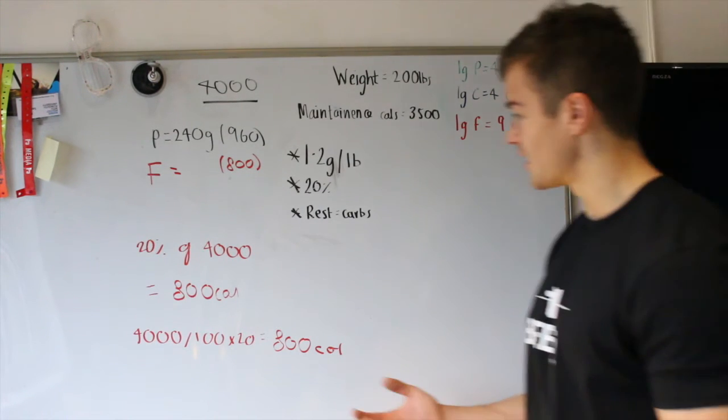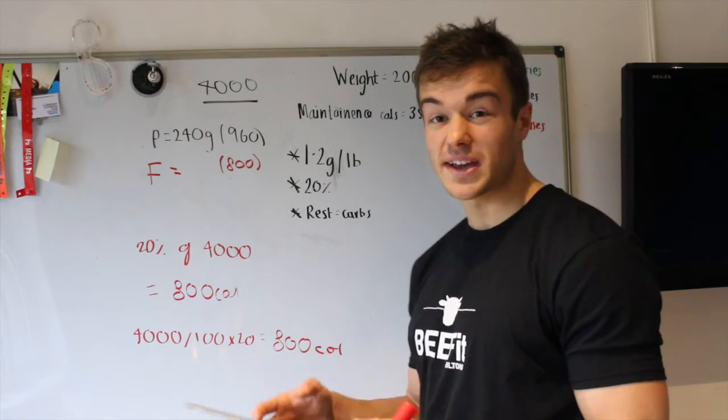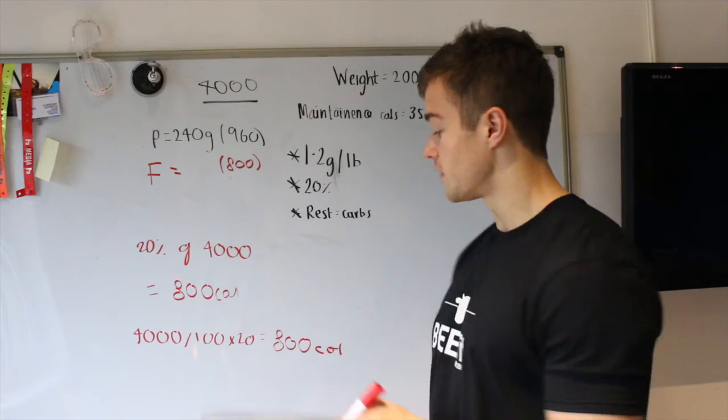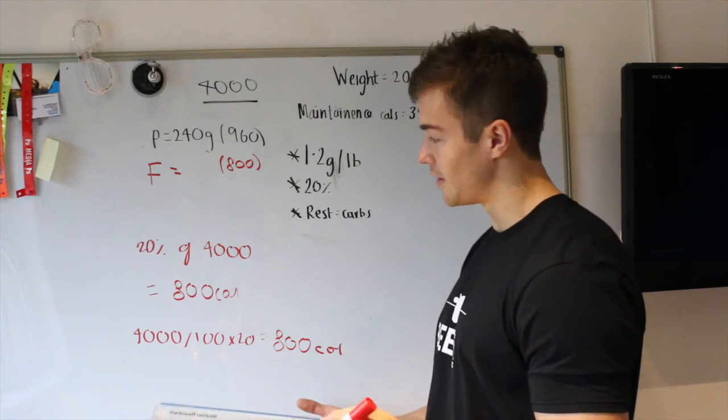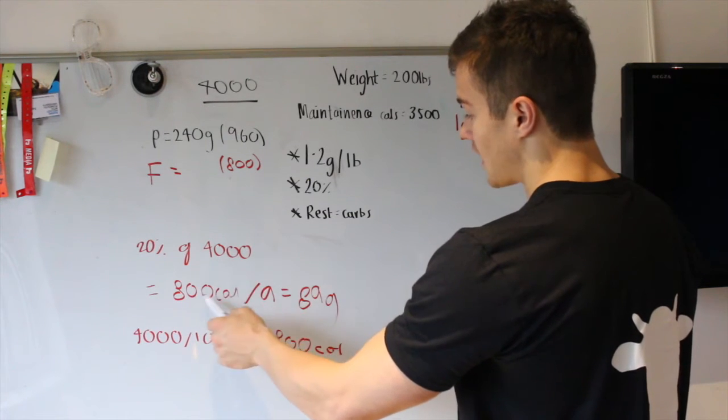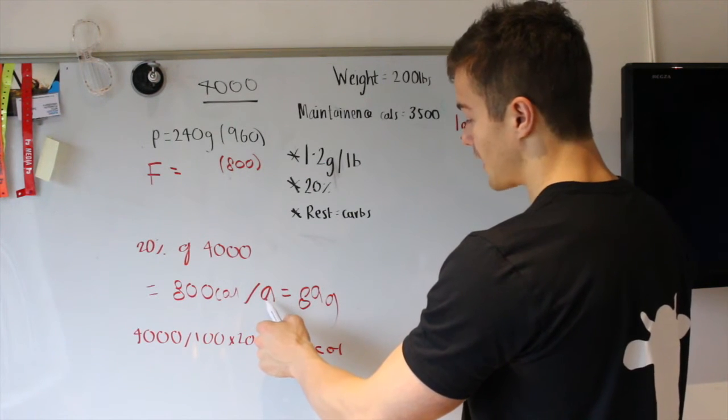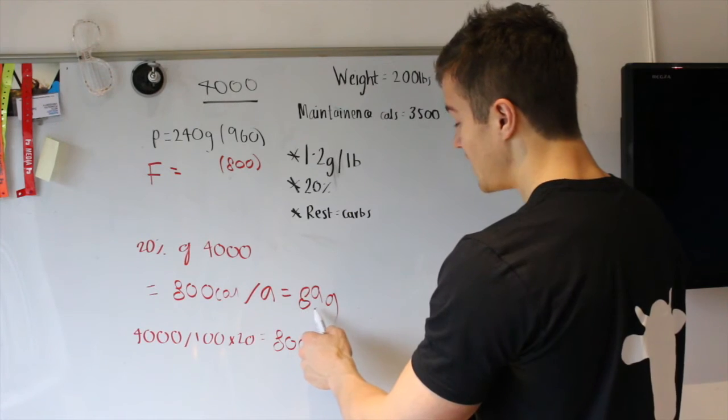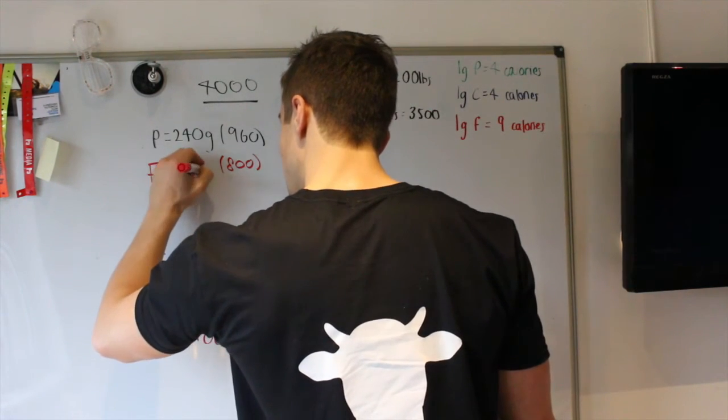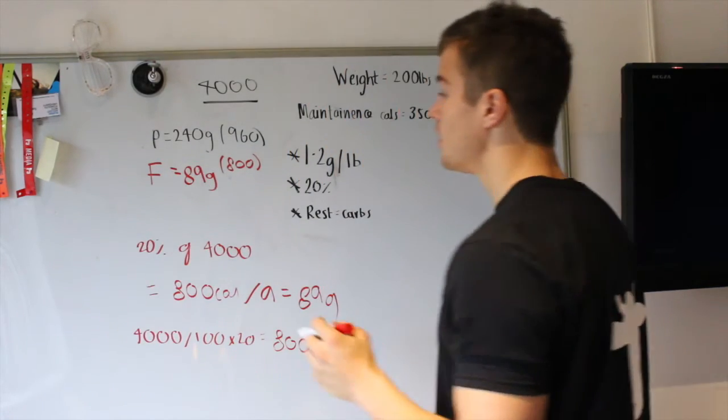It's more calorie dense. So, as I said earlier, if you struggle to gain weight, struggle to get those calories in, you might want to go to 25% fat, slightly higher, rather than 20%. But I don't really struggle that much. We are going to do the amount of calories from our fat, which is 20% of our total calories, divided by 9, which is the amount of calories in 1 gram of fat, equals 89 grams. So, I'm going to be on 89 grams of fat per day.